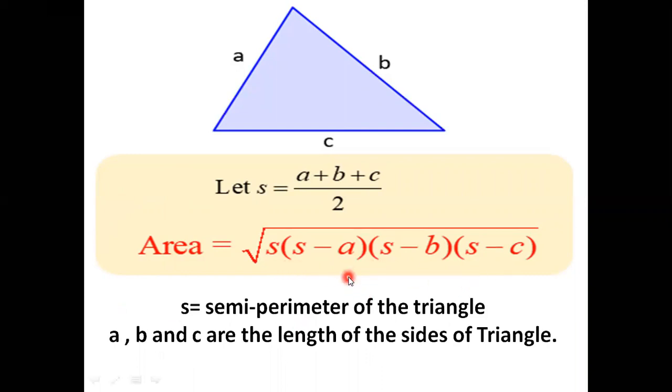Now, what is A, B, and C? A, B, and C are the measures of the three sides of the triangle, which would be known to you. So all that you have to do is put the value of semi-perimeter in the given equation, as well as the values of A, B, and C, which are the three sides of the triangle. In this way, you can actually find the area of a triangle.